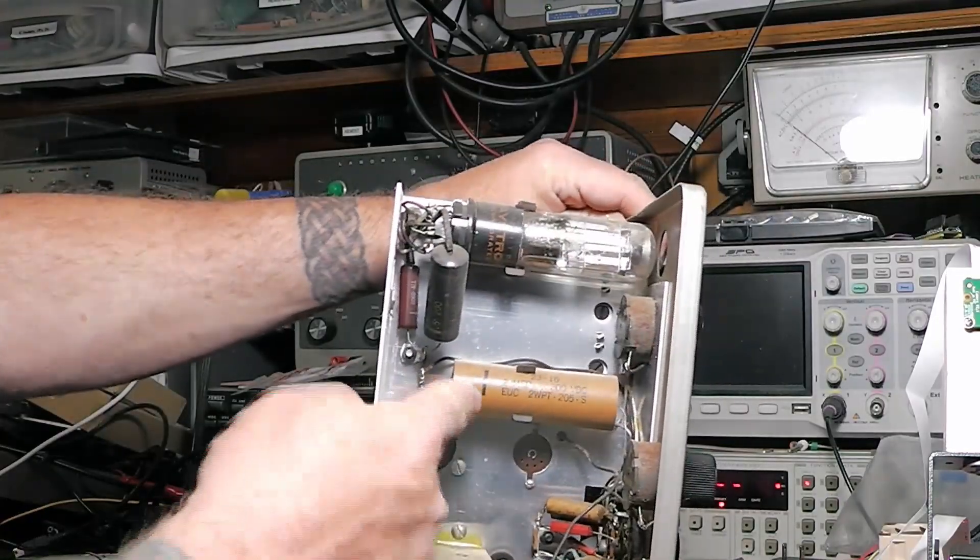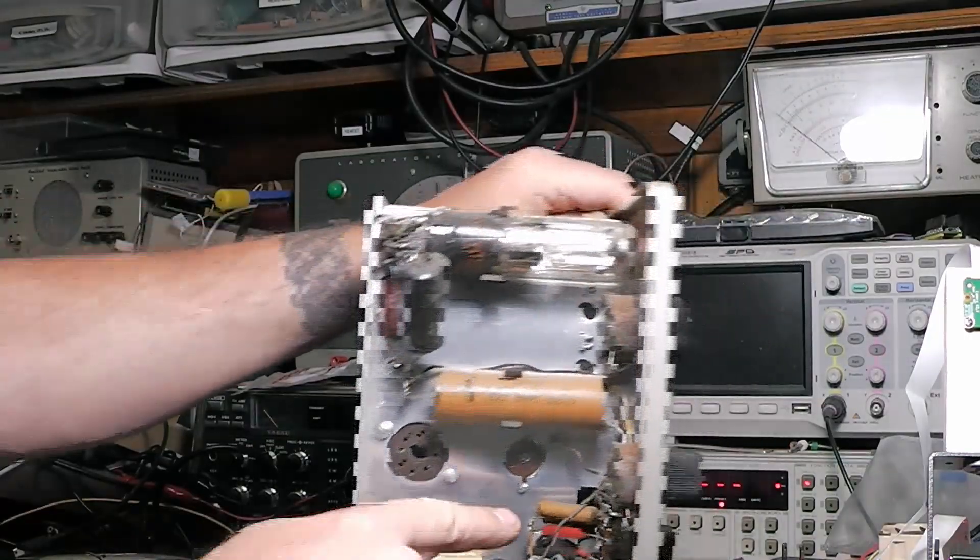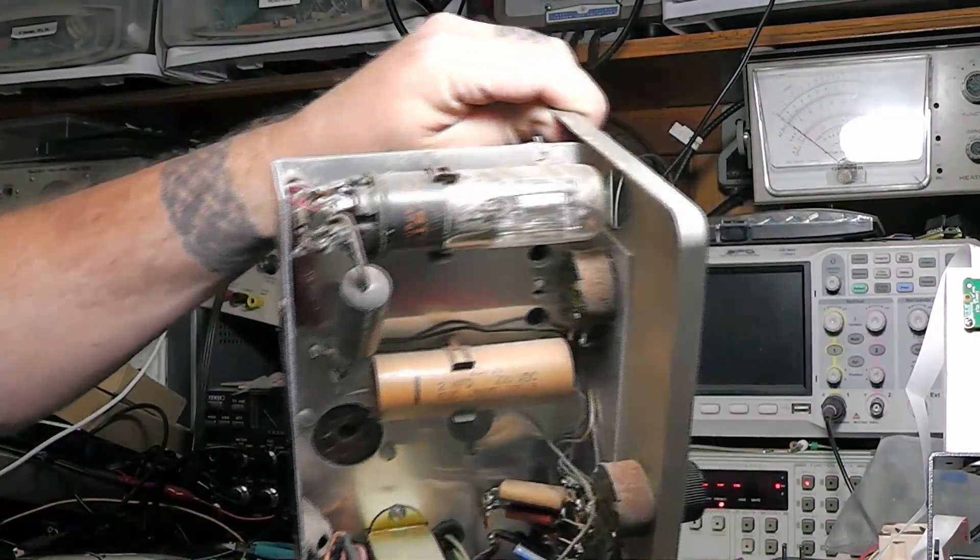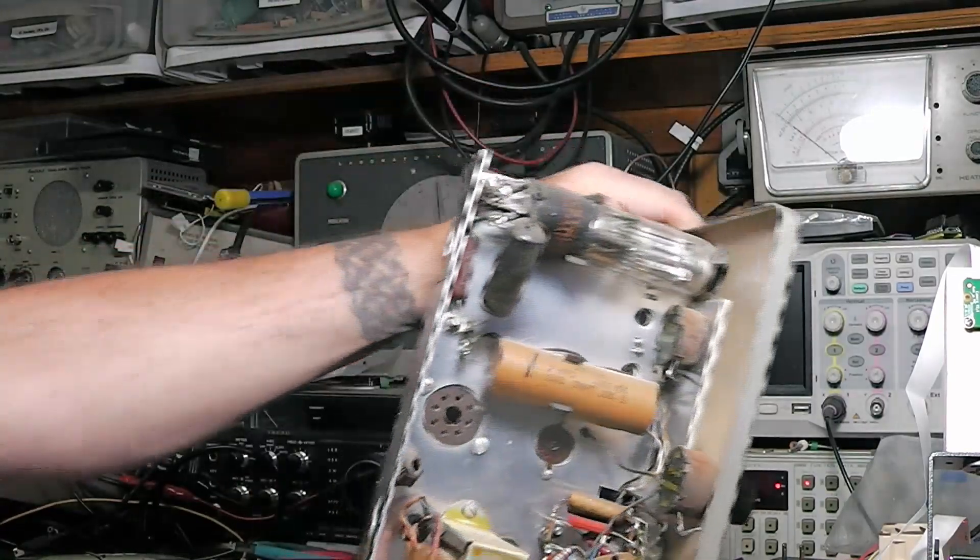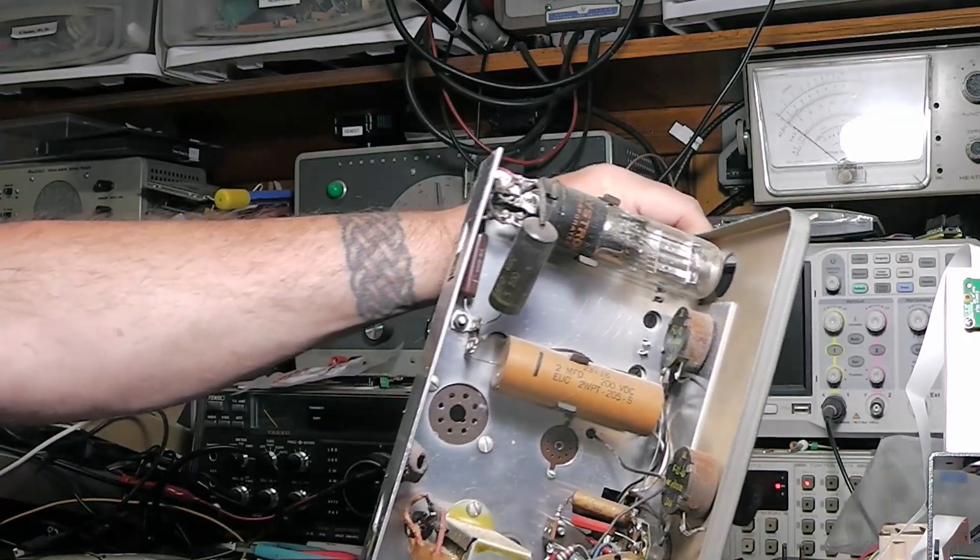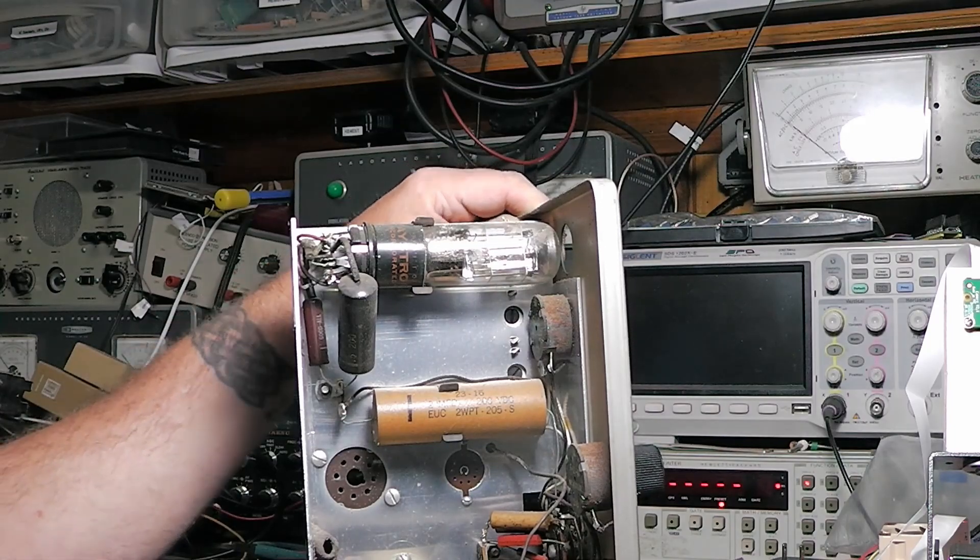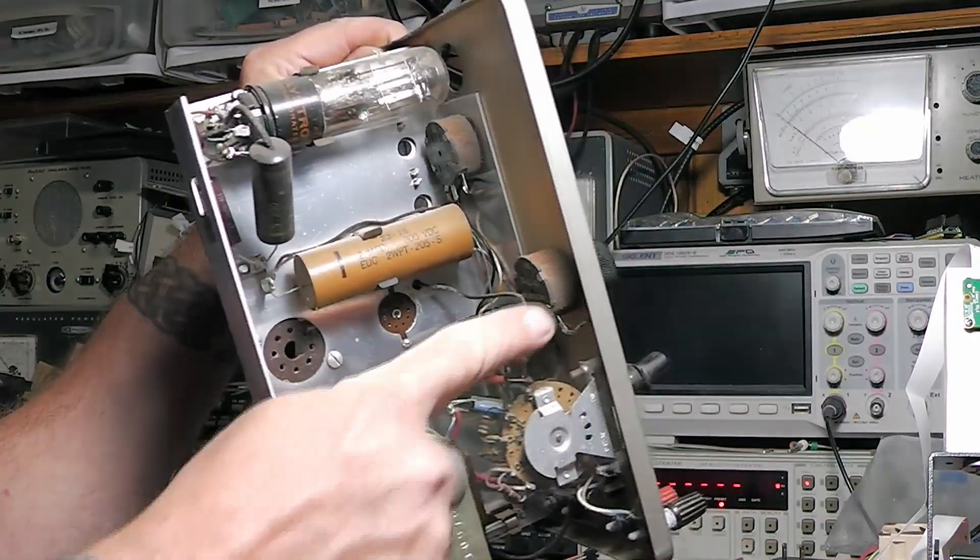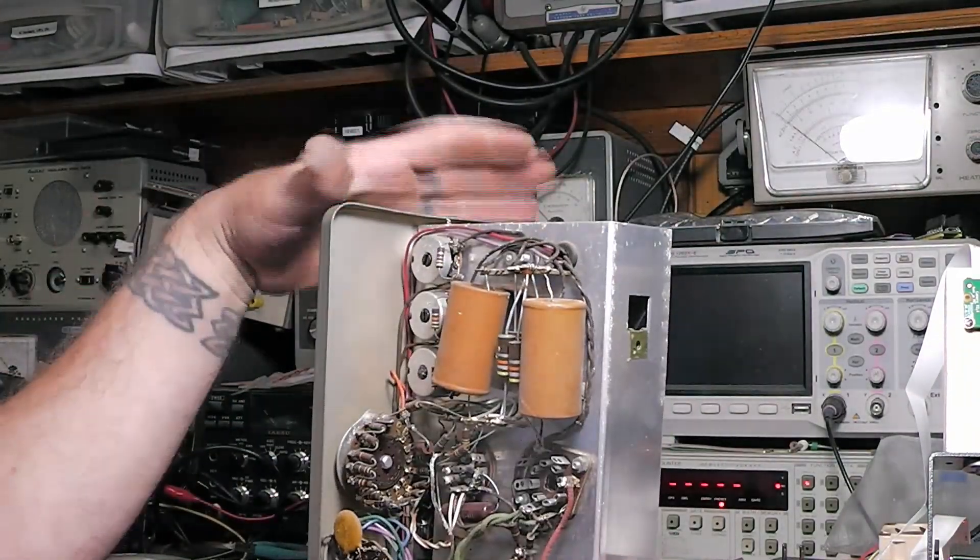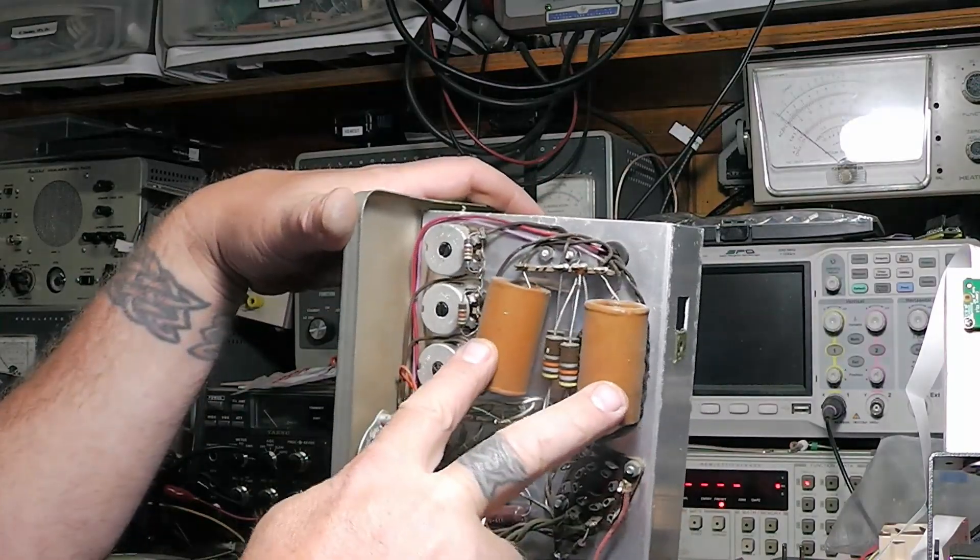You can see all original capacitors here. This is going to have to go, that'll have to go. There's two capacitors here that are going to have to go. Allen Bradley style resistors, so that'll probably be alright, but the life this thing's had, who knows. I'll have to clean all the contacts up in here and in all these potentiometers.